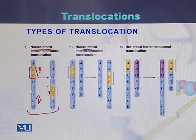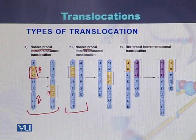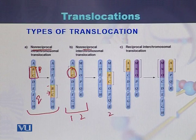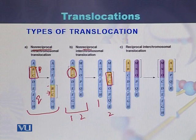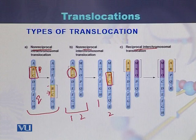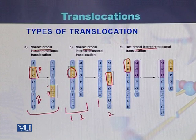In case of non-reciprocal inter-chromosomal translocation, this type of translocation is between two chromosomes. A fragment from chromosome 1 is deleted and joined onto chromosome 2. Fragments B and C are deleted from chromosome 1 and join with chromosome 2. The third type is reciprocal inter-chromosomal translocation, where a fragment is deleted from chromosome 1 and joined to a second chromosome.